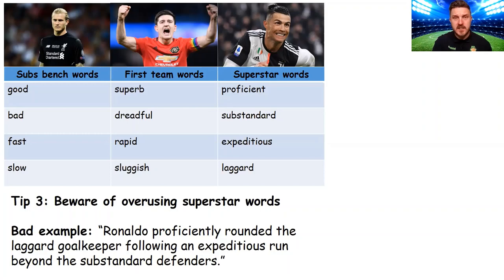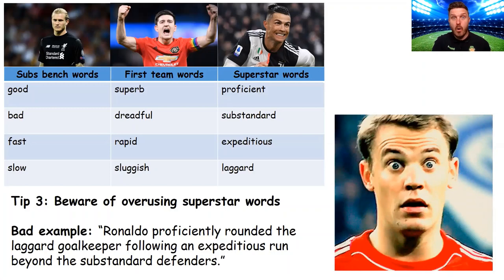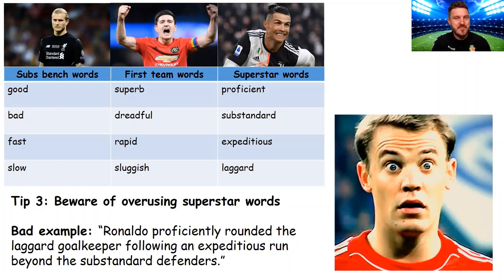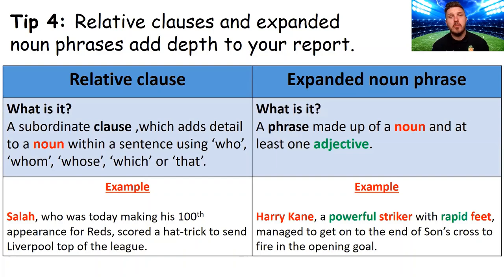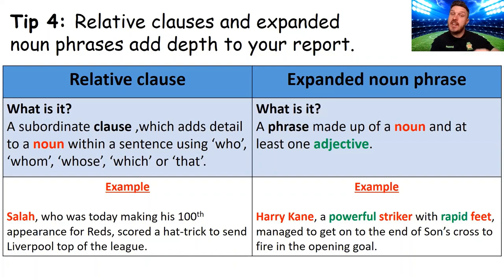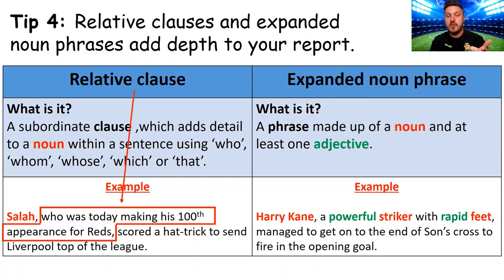Tip number four: it's important to add a little bit of detail and depth to your match reports — try using relative clauses or expanded noun phrases. A relative clause is a subordinate clause which adds detail to a noun — a person, for example — within a sentence, using 'who,' 'whom,' 'whose,' 'which,' or 'that.' For example: 'Salah, who was today marking his 100th appearance for the Reds, scored a hat-trick to send Liverpool top of the league.' The relative clause is that bit in the middle — 'who was today making his 100th appearance for the Reds.'